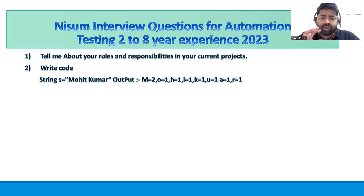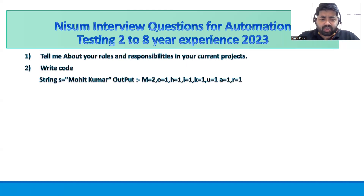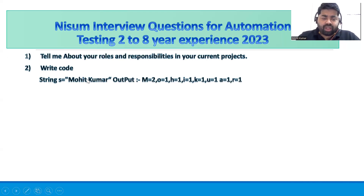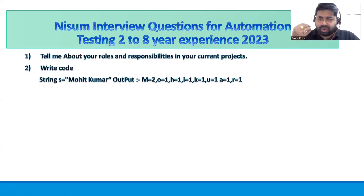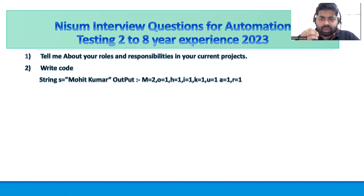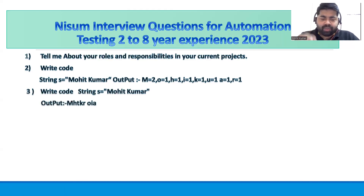The second question is a coding question in Java — this is for a Java Selenium profile. They give you a string like 'Mohit Kumar' and want you to find the number of occurrences of each character in that string. This is a common question. I've already made a video on this. First try it yourself, and if you're not able to write it, take help from Google or check my playlist.